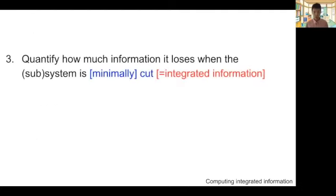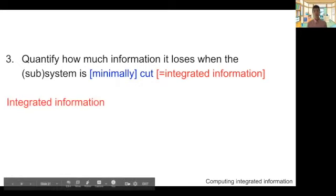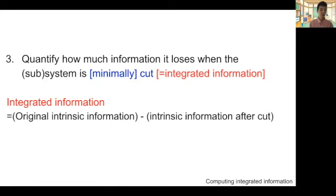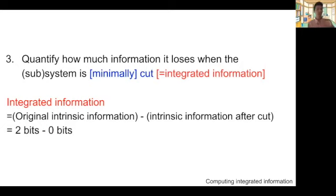So system AB has no knowledge about its future or past state — it doesn't have any intrinsic information about itself if the connection is replaced by noise. This corresponds to the step of quantifying how much information the subsystem loses when it is minimally cut, and this amount is defined as integrated information, phi. Conceptually: phi equals original intrinsic information minus intrinsic information after the cut. In this case, two bits minus zero bits equals two bits of integrated information.